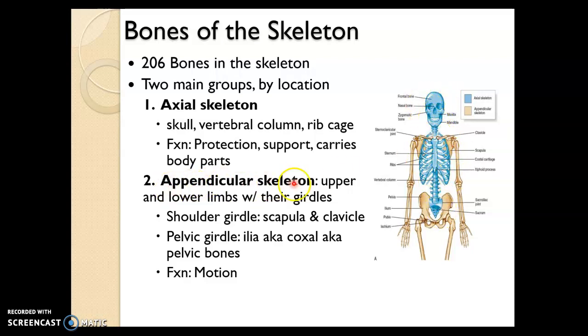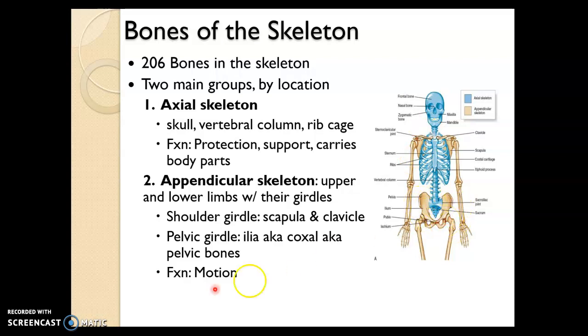The appendicular skeleton, which you see here in beige, includes the extremities — upper and lower extremities — as well as the bones of the shoulder girdle and pelvic girdle.